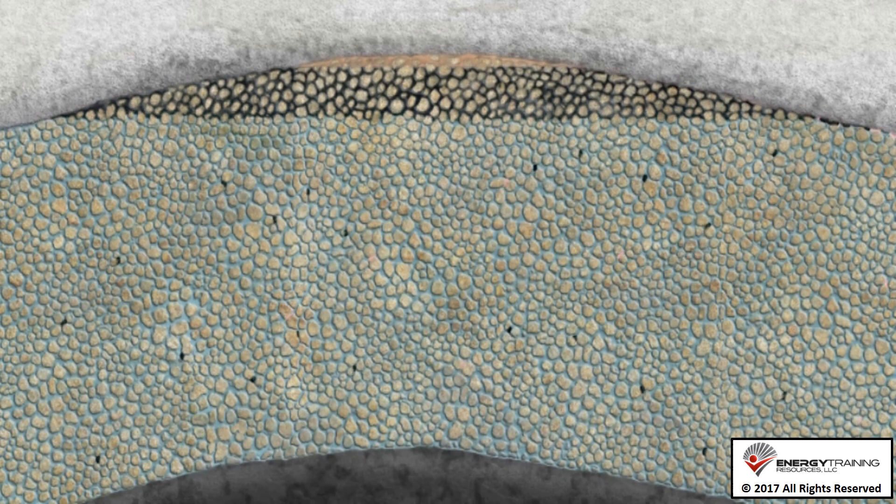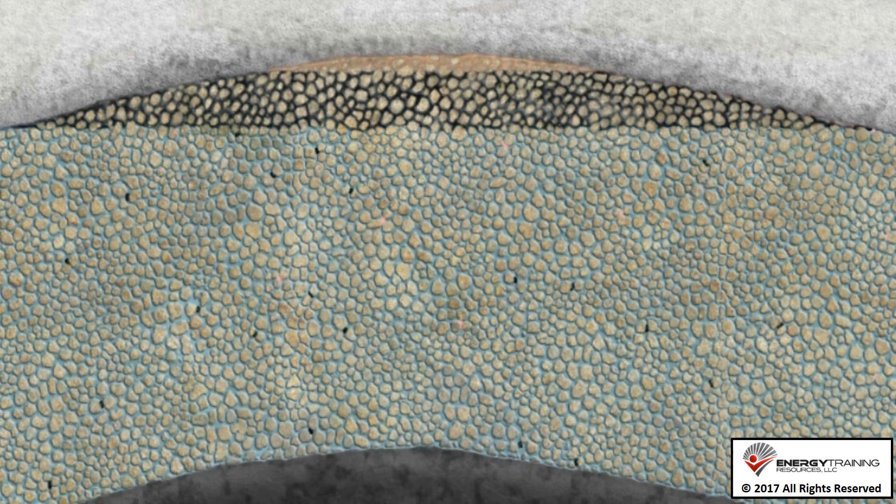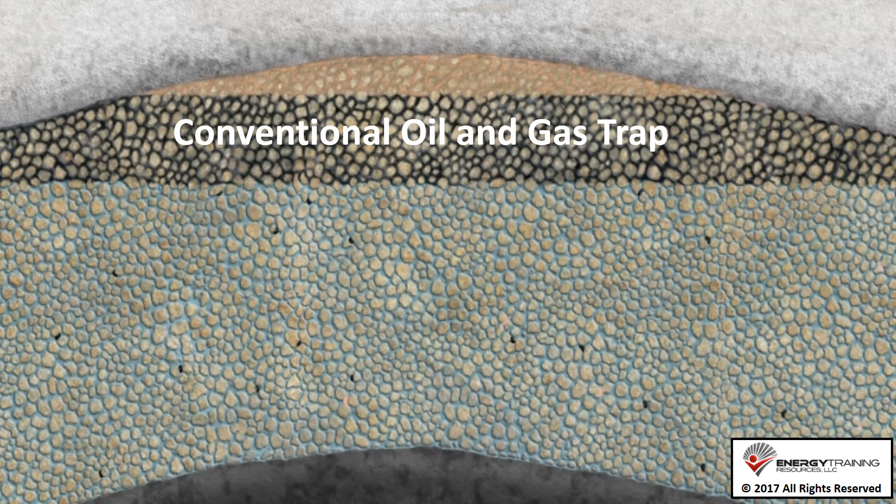If the oil and gas encounters an impermeable layer that blocks its upward migration, it may begin a lateral migration along the layer boundary. If the migrating oil and gas encounters a trap-like structure that it cannot escape, then oil and gas will begin to accumulate in the trap in the pore spaces between the rock grains. Traps are often created by faults or folds in rock layers. The structure shown is an upward rock fold called an anticline. This is called a conventional oil and gas trap.